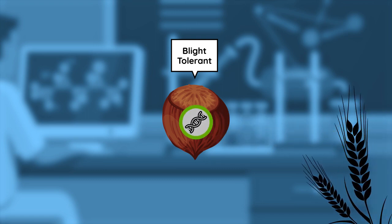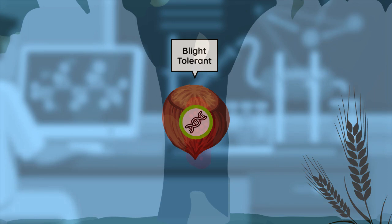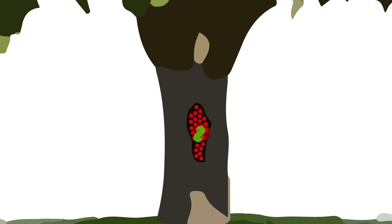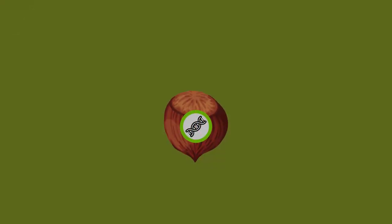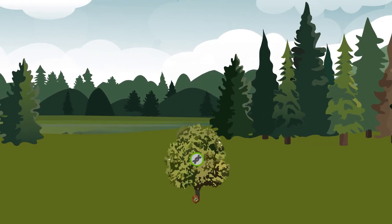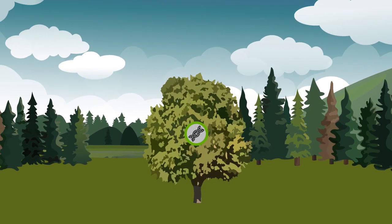We have been able to make blight-tolerant American chestnut trees by transferring an oxalate oxidase gene from wheat into the chestnut's genome. This enzyme protects the tree from the acid by transforming it into harmless compounds. By removing the weapon of the fungus, the tree and the fungus can now coexist. Because it is a very small change, the American chestnut tree retains all of its original genes and is still fully adapted to its habitat.